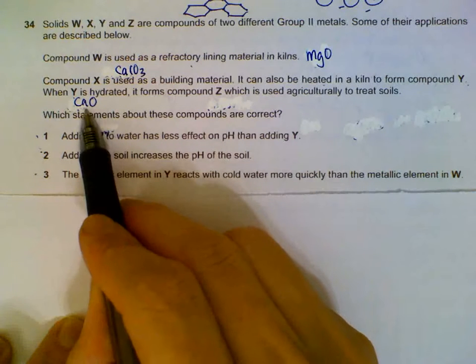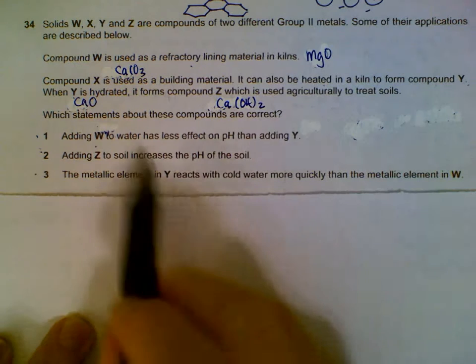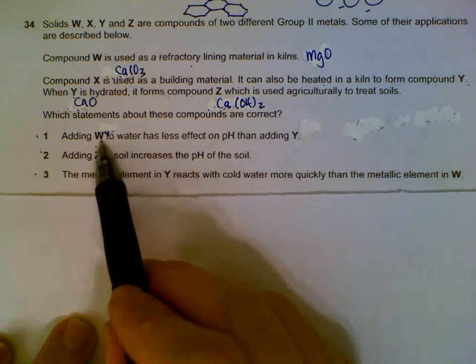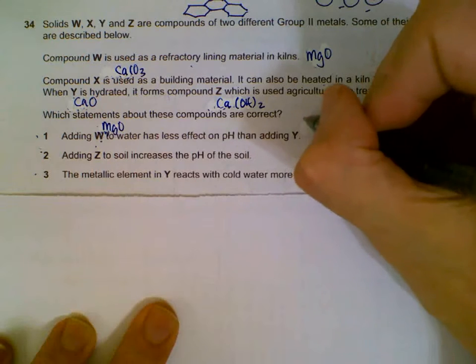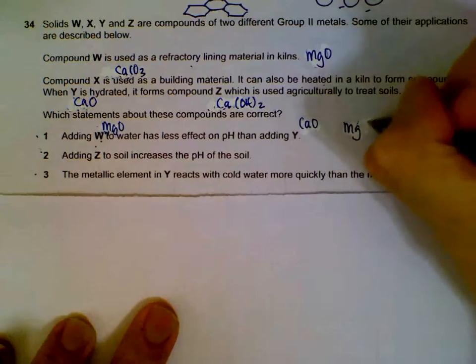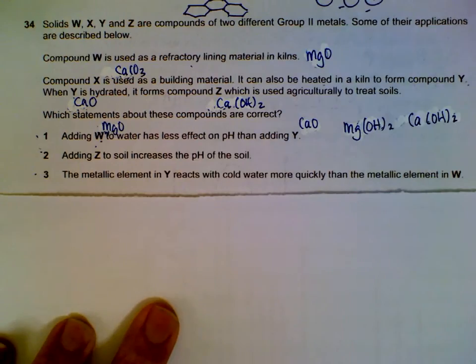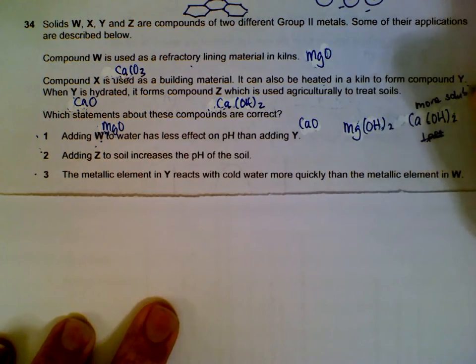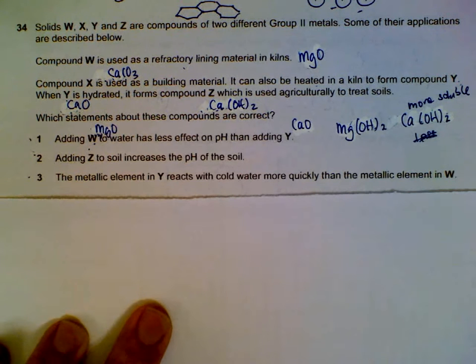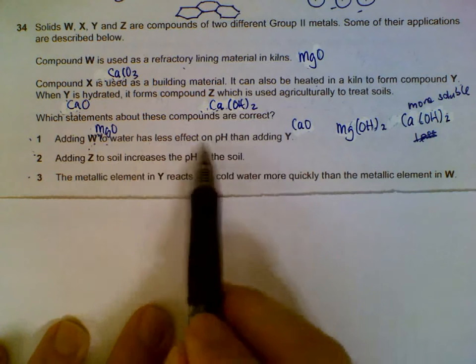So calcium oxide, when it's hydrated to form Z, we will be having calcium hydroxide. Which statements are correct? Adding W, which is magnesium oxide, to water has less effect on pH than adding Y, which is calcium oxide. When added to water, we get magnesium hydroxide and calcium hydroxide, and then you have to remember the solubility. For Group 2, as you go down the group, the hydroxide becomes more soluble. So calcium hydroxide is more soluble and will cause the pH to increase more than magnesium hydroxide. So W has less effect on pH - that is correct.